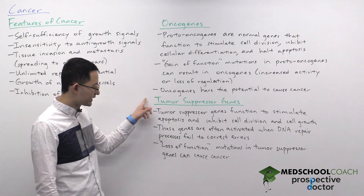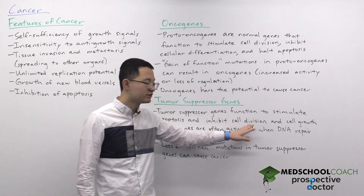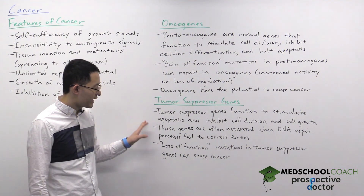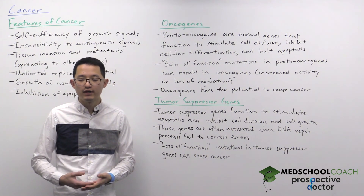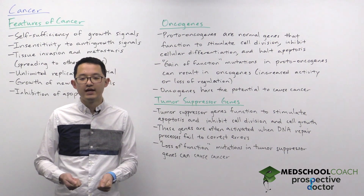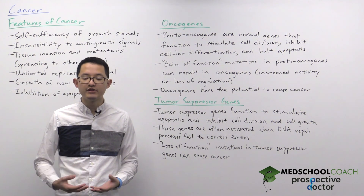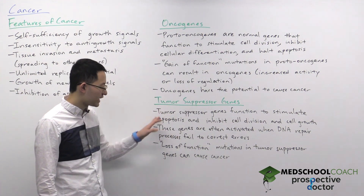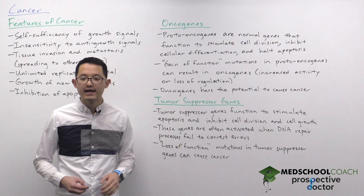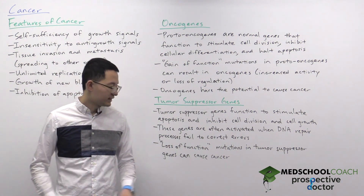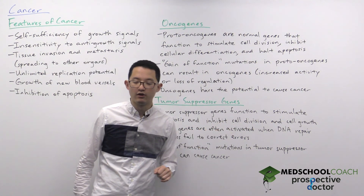Now let's look at tumor suppressor genes. These are normal genes within the cell that function to stimulate apoptosis and inhibit cell division and growth. They are often activated when DNA repair processes fail to correct errors. When there's a DNA mutation, repair processes are initiated to fix the damage; if those processes fail, tumor suppressor genes stimulate apoptosis. If tumor suppressor genes themselves are mutated with loss-of-function mutations, they can no longer do their job, and this can cause cancer because the cell can't stimulate apoptosis or inhibit cell division and growth.